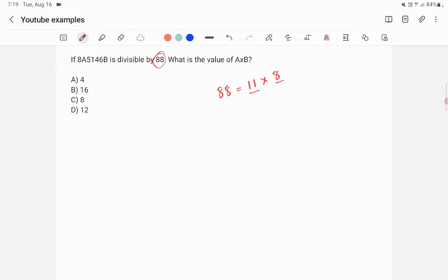The divisibility rule for 8 says that a number is divisible by 8 if the last three digits of that number are divisible by 8. So here, 46b must be divisible by 8.